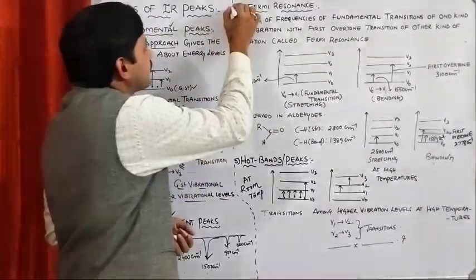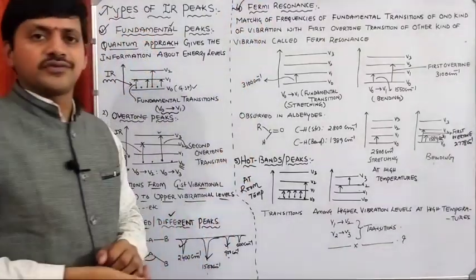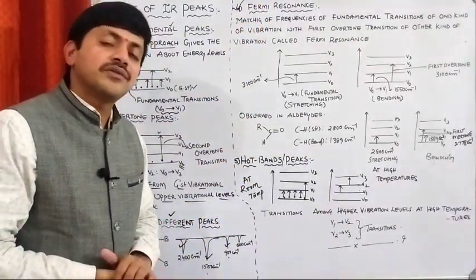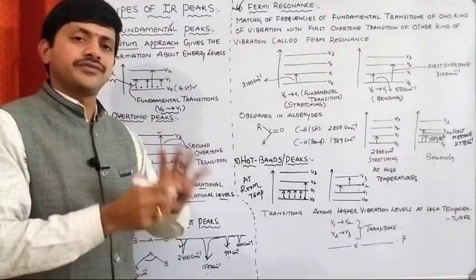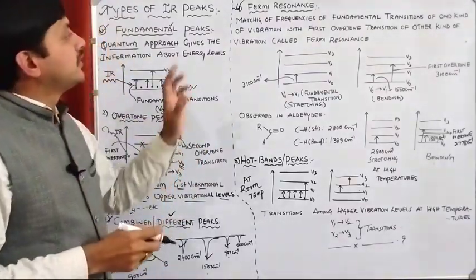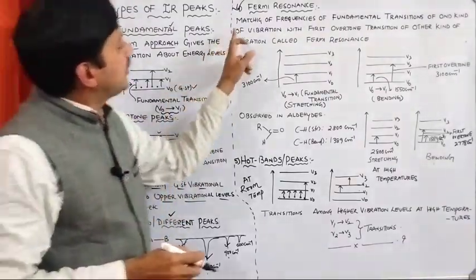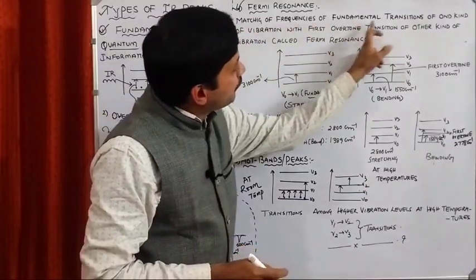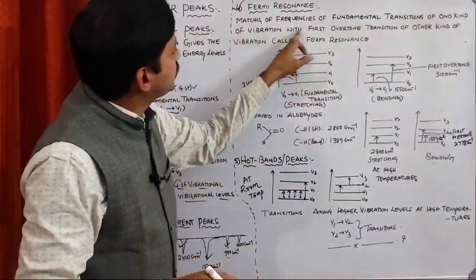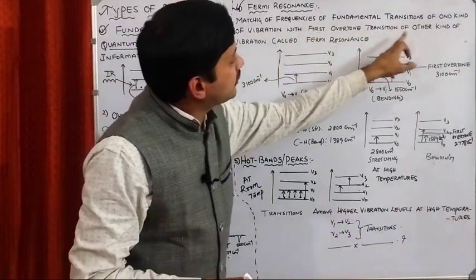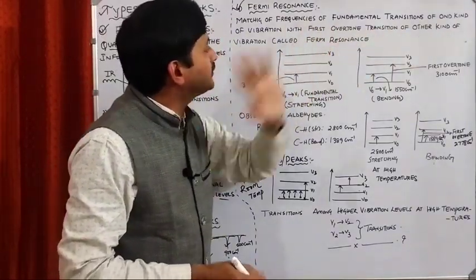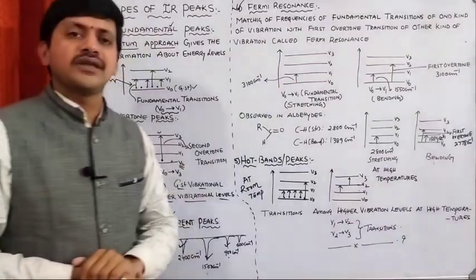The next very important concept is commonly called Fermi resonance. It is very important but simple. Fermi resonance is the matching of the frequency of the fundamental transition of one kind of vibration with the first overtone transition of another kind of vibration.